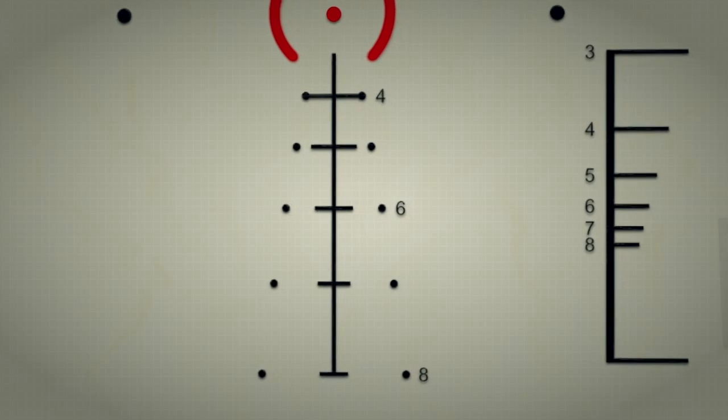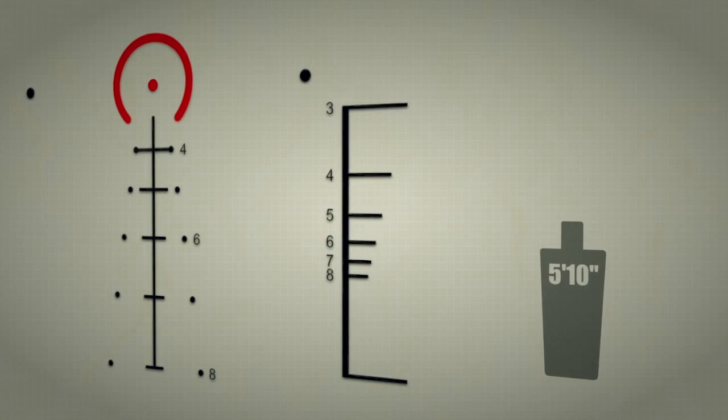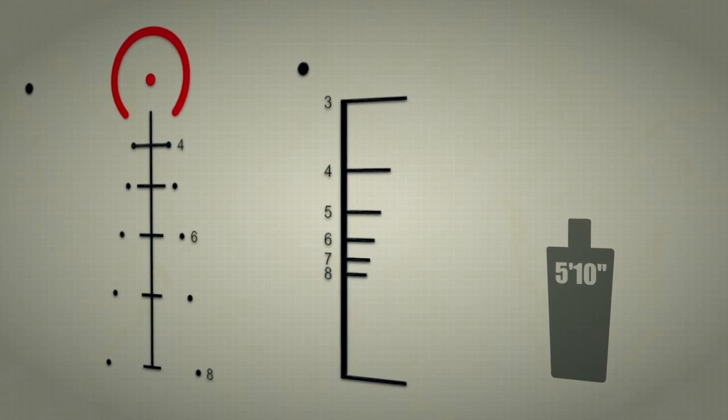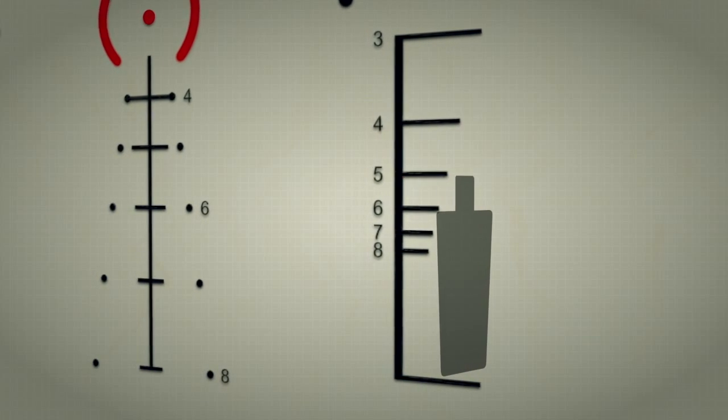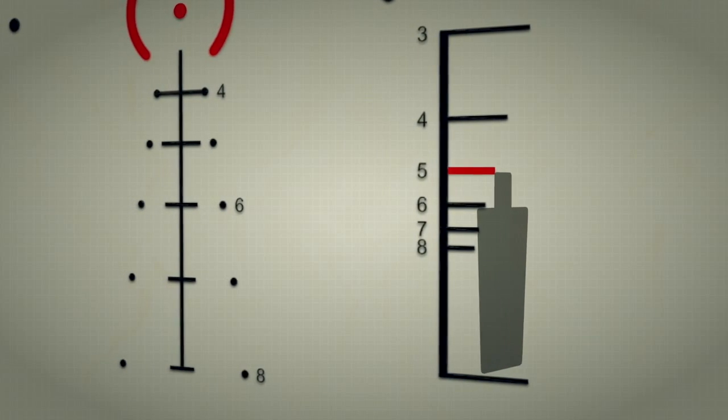You will also notice a vertical range estimation set for 5 to 10 on the right side of the reticle. All you simply do is place the bottom of the target on the bottom line and see where the top lines up.